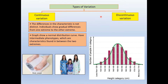Types of variations. There are two types of variations: continuous variation and discontinuous variations. For continuous variation, the differences in the characteristics are not distinct. Individuals show gradual differences from one extreme to the other extreme, meaning the differences are not obvious from one another. The graph shows a normal distribution curve, also known as a bell-shaped curve.